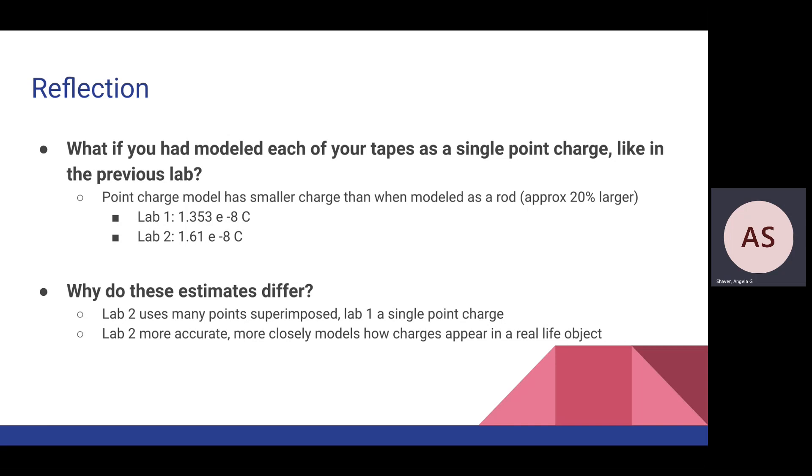For the reflection, if we had modeled each tape as a point charge as in Lab 1, that model would have had a smaller charge than modeling it as a rod. Comparing to Lab 1, the charge was 1.35 × 10^-8 Coulombs. In Lab 2, the charge was 1.61 × 10^-8 Coulombs.